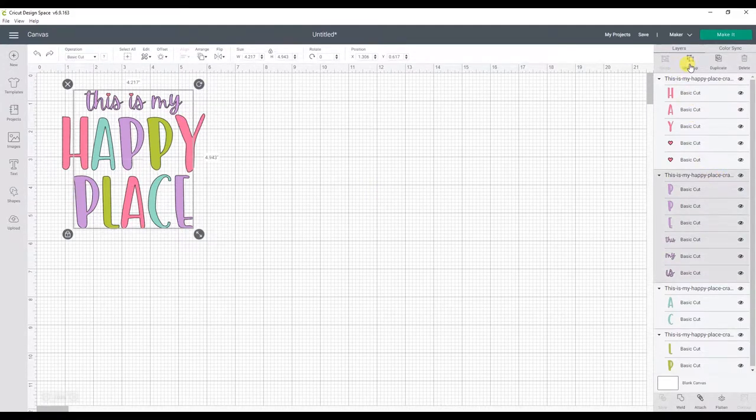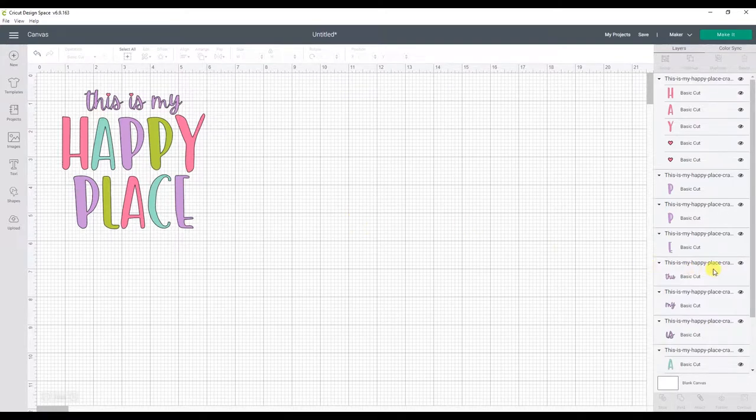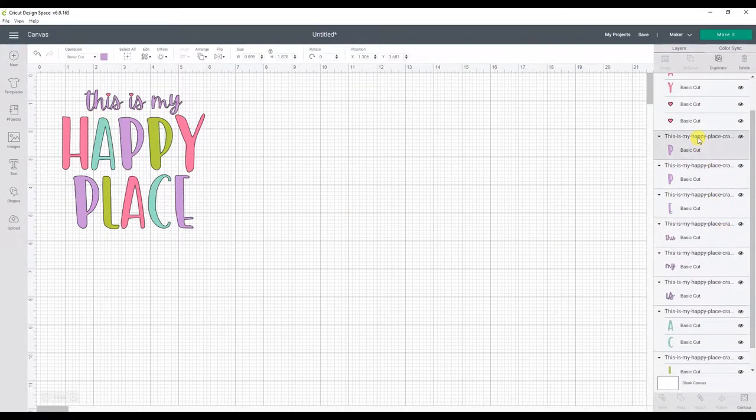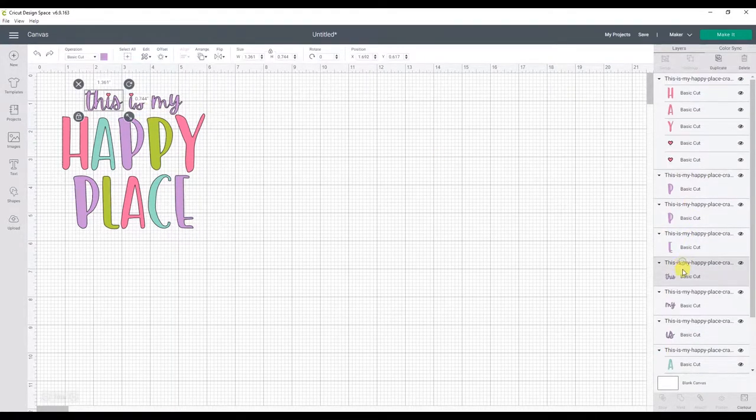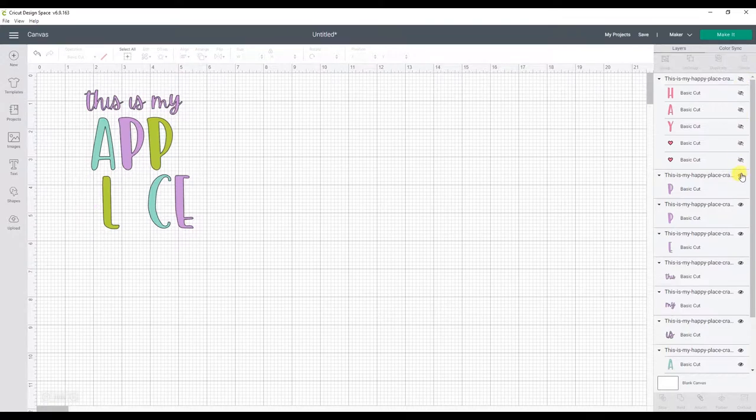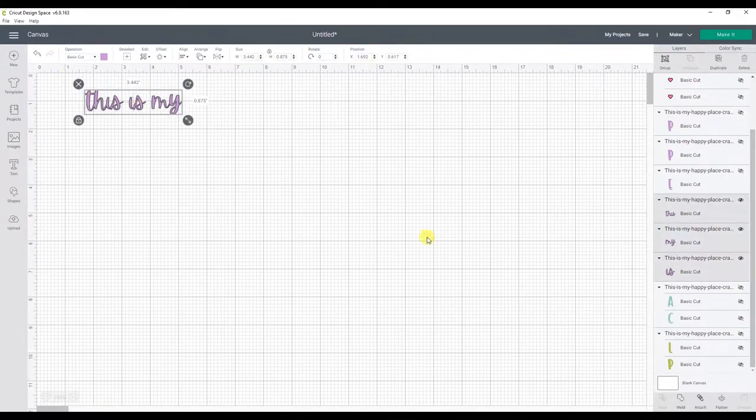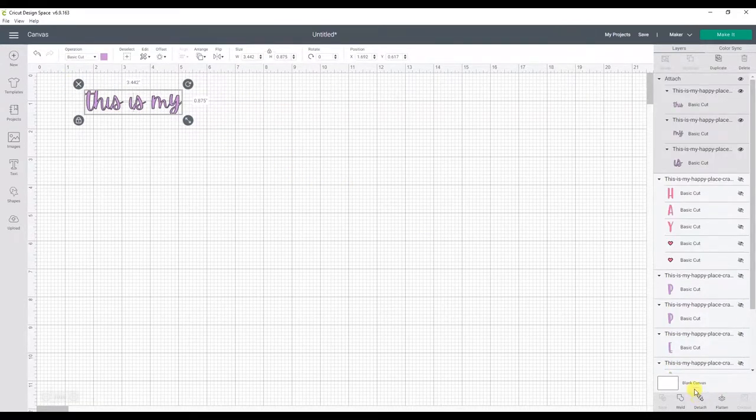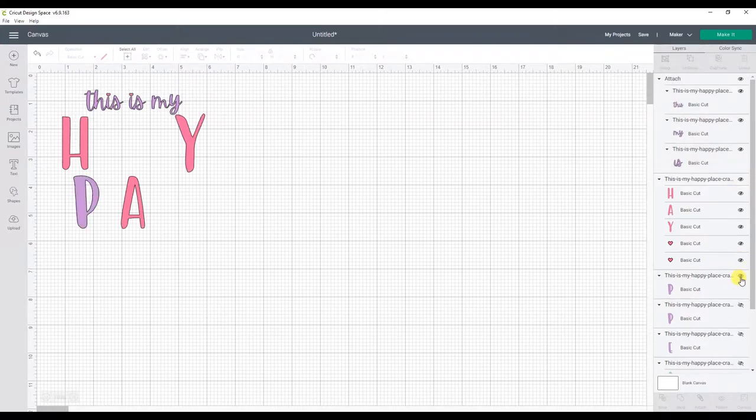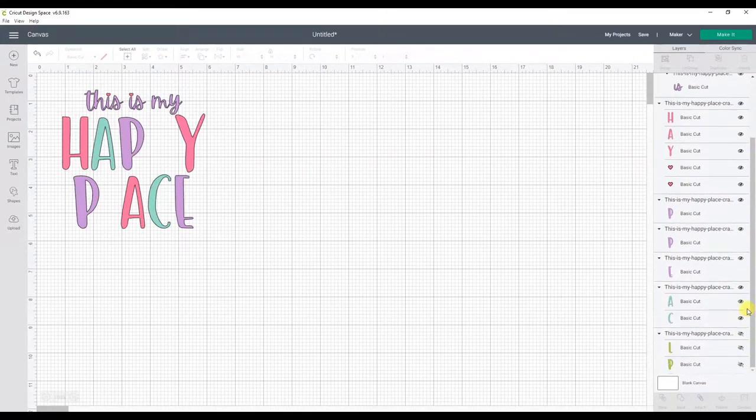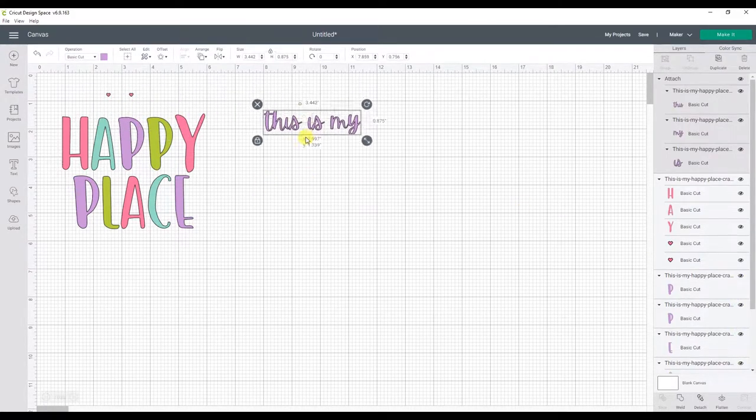You can see now that each individual word and letter is separate for the purple part of the design, but I want the this is my part of the design to stay attached during the cut. You can do this by either holding down the shift key and selecting each word in the layer column and clicking attach, or you can hide all of the other parts of the design, click and drag to select all three words and then click attach.